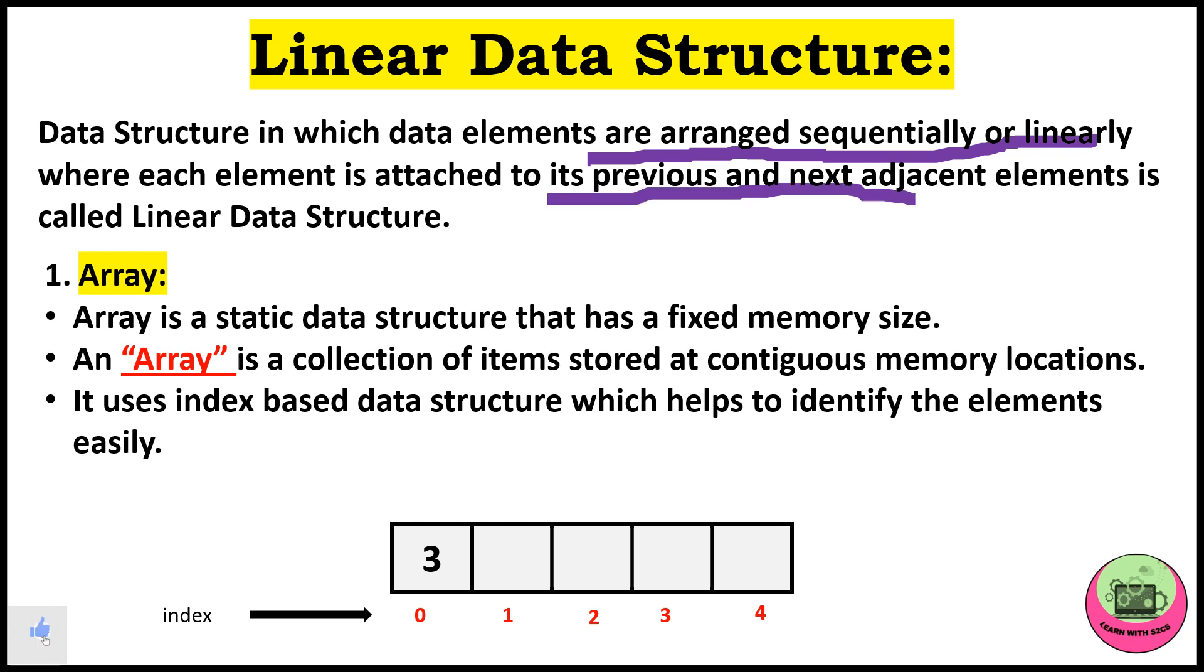The first is array. Array is a static data structure that has a fixed memory size. It can't change. An array is a collection of items stored at contiguous memory locations. Contiguous memory location means the locations which are adjacent to each other.